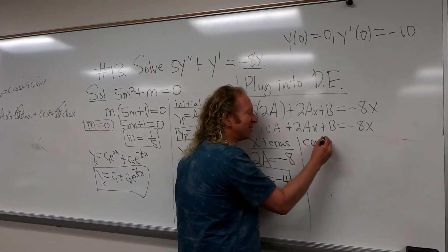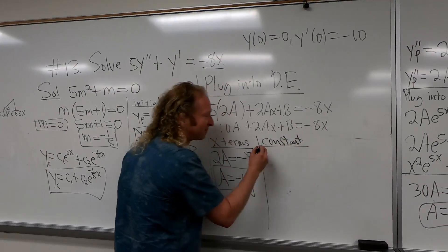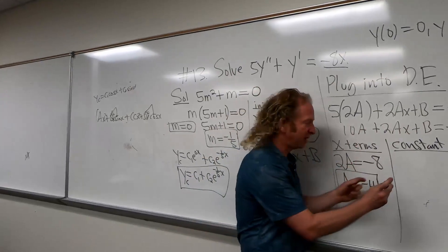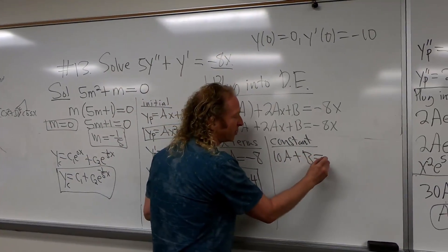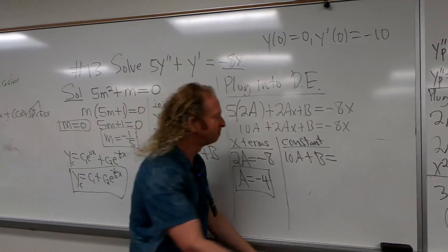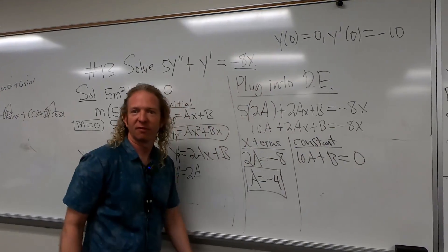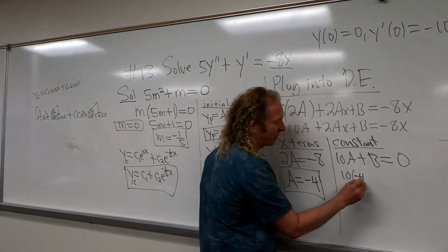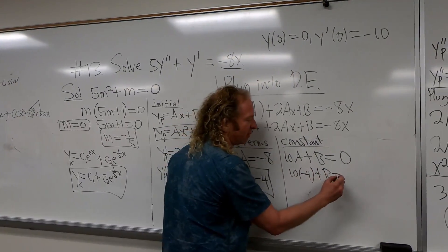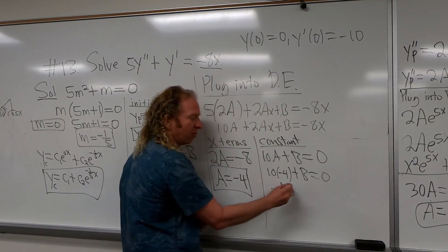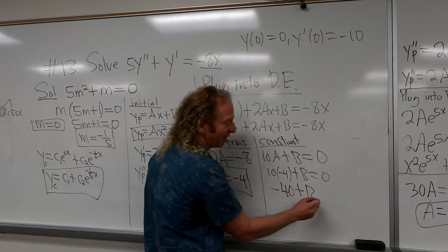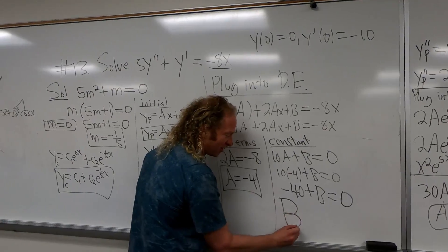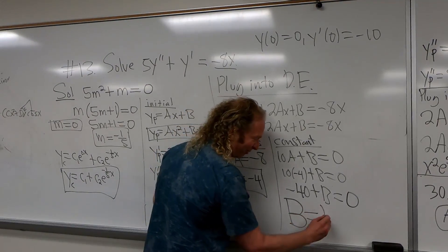Now constant terms: 10A plus B equals 0. We have 10 times negative 4, which is negative 40, plus B equals 0. So B equals 40.